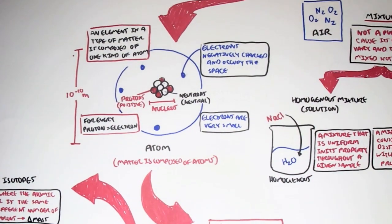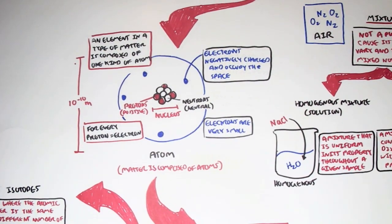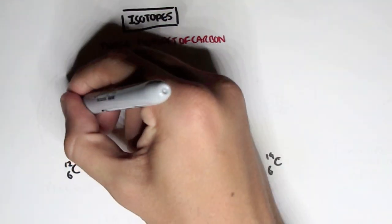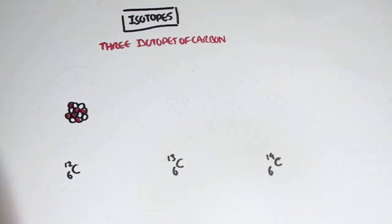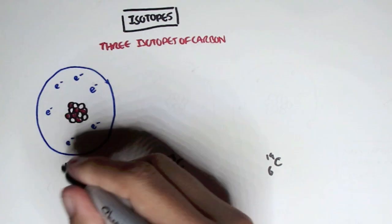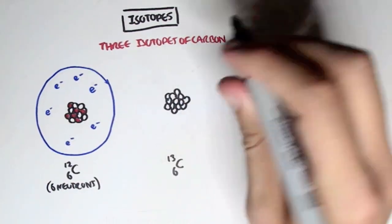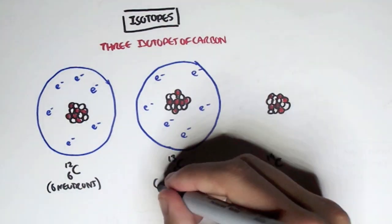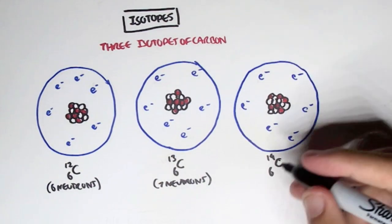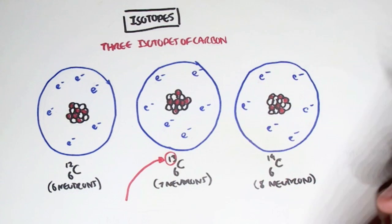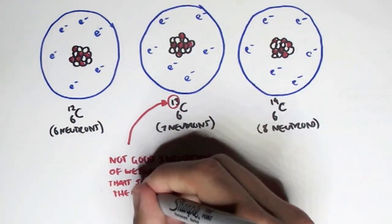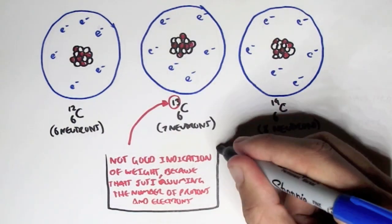Now let's look at some other isotopes. Carbon has three types of isotopes. There's carbon 12, carbon 13, and carbon 14. Carbon 12 has essentially 6 neutrons. Carbon 13 has 7 neutrons, and carbon 14 has 8 neutrons.